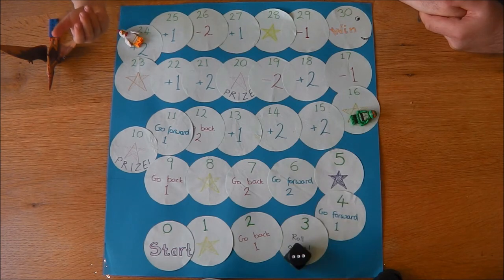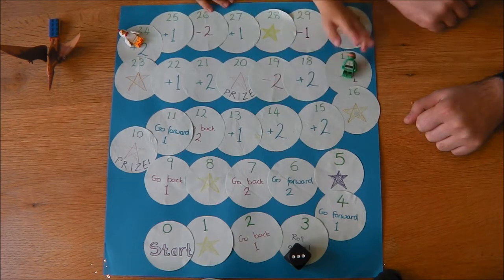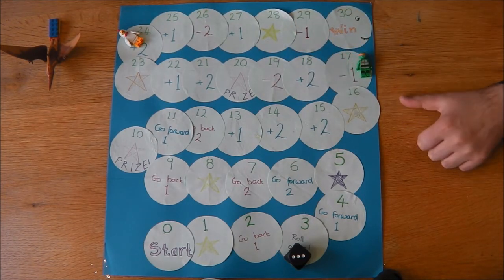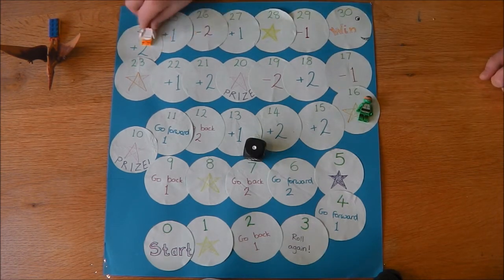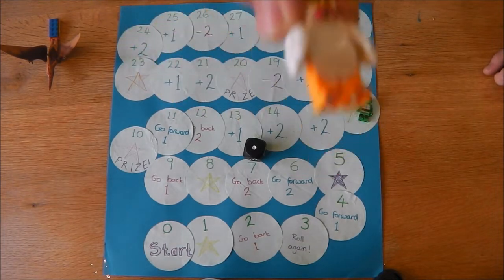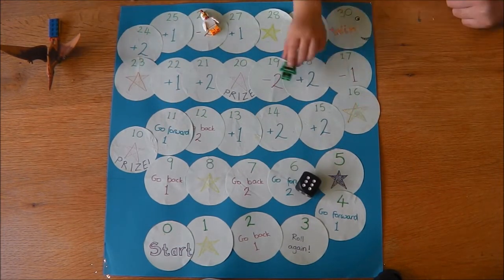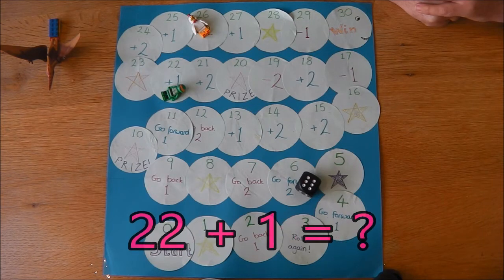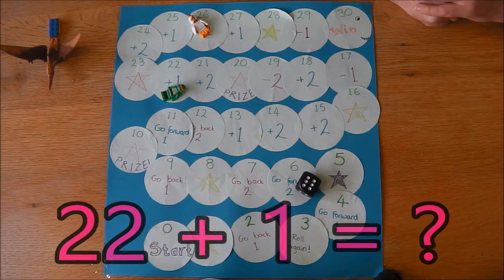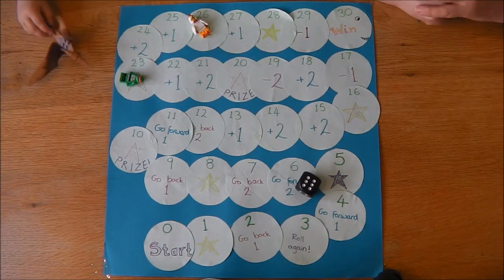Dougie rolled a 3. What does that say you have to do? Go back two. Now what do you have to do? You have to go back one. My turn. Daddy's still stuck. Your turn then. And what does that say you have to do? Add one. You're on 22, so what's 22 add one? 22 add one is 23. Good job.